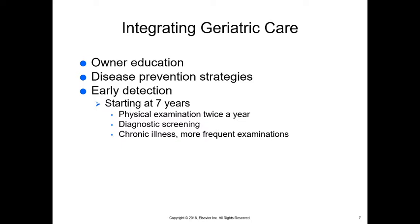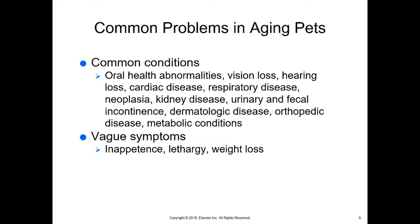Integrating geriatric care means educating owners on disease prevention strategies and starting to look for issues earlier. Early detection starts at seven years. We want to perform physical exams at least twice a year at minimum, do diagnostic screening including blood work and urinalysis regularly, and see animals with chronic illness even more frequently.